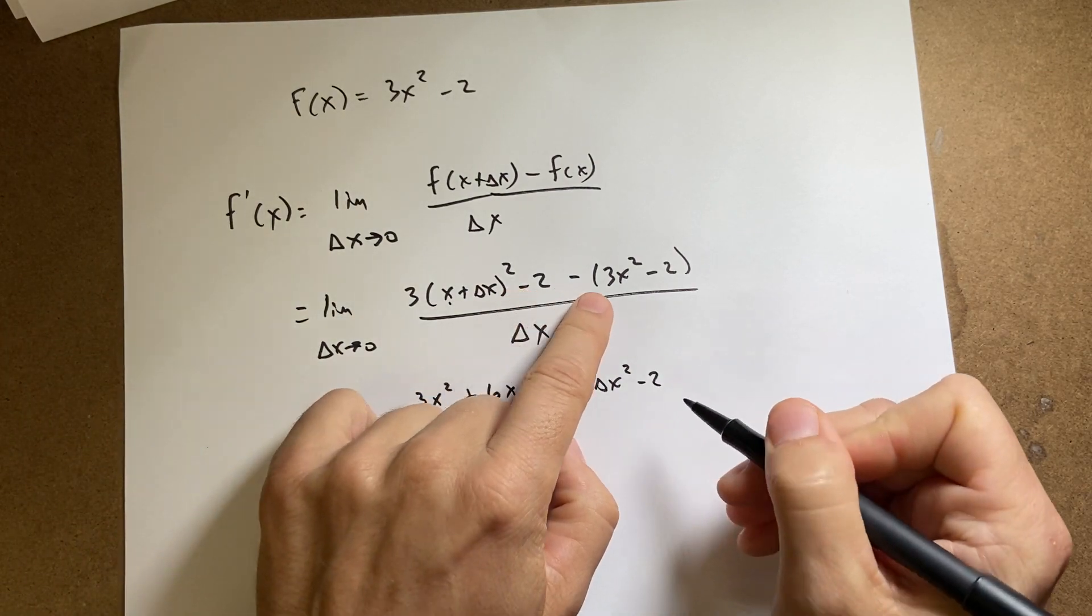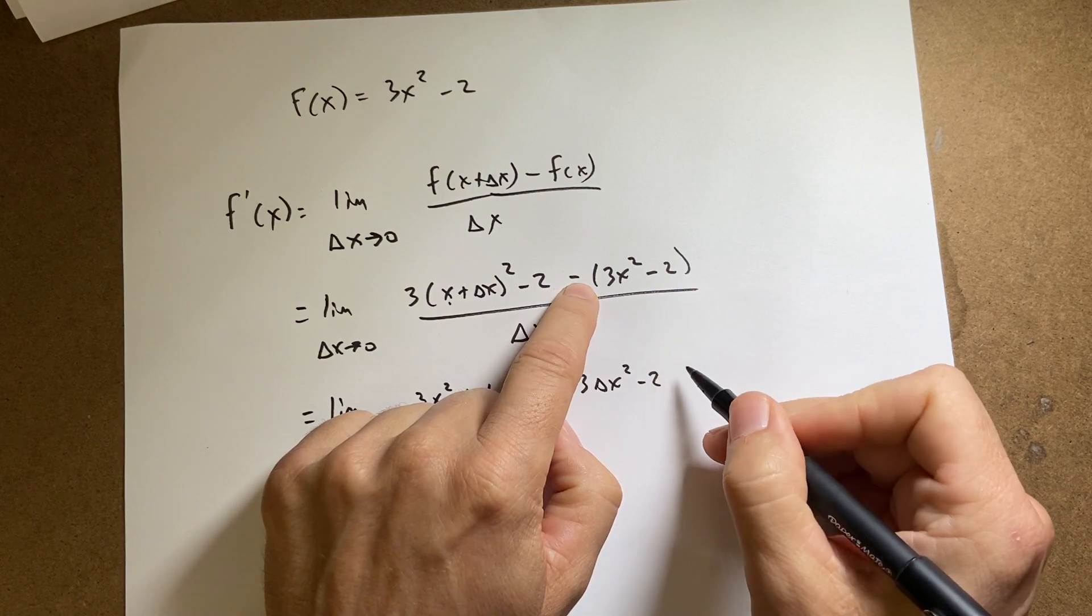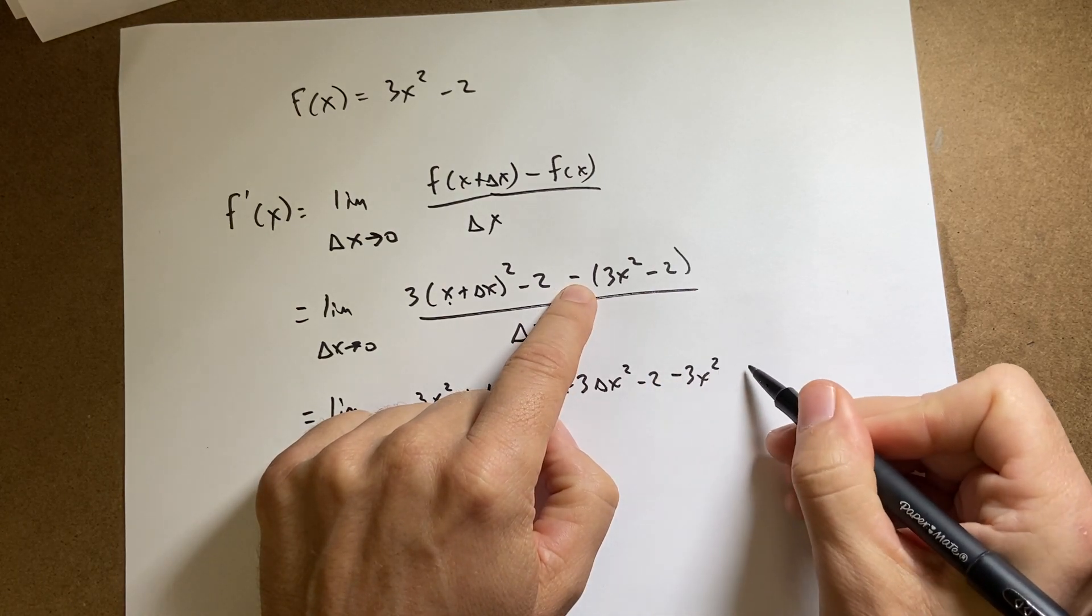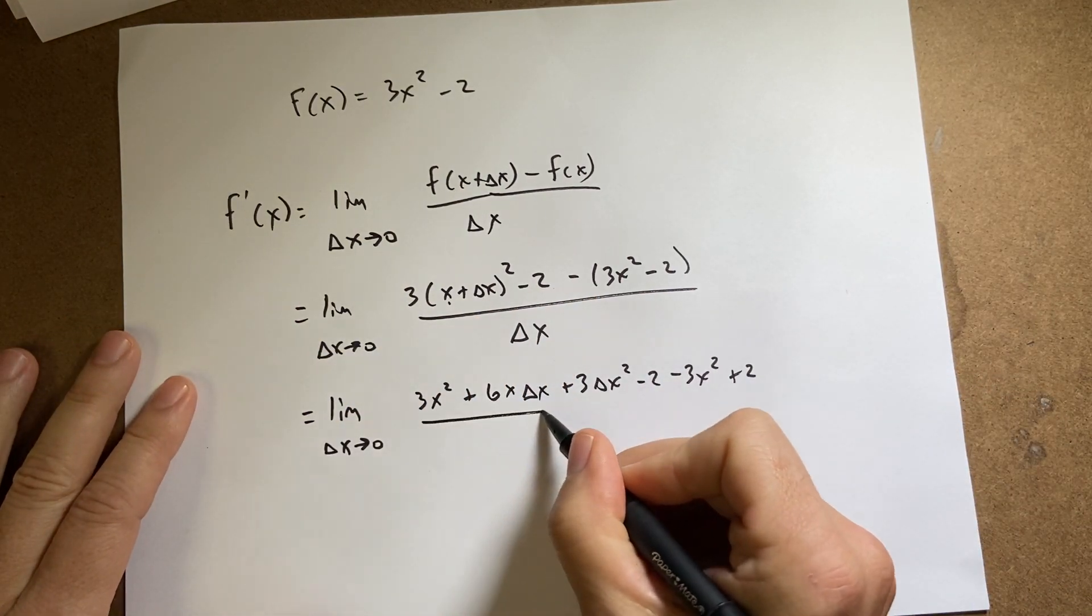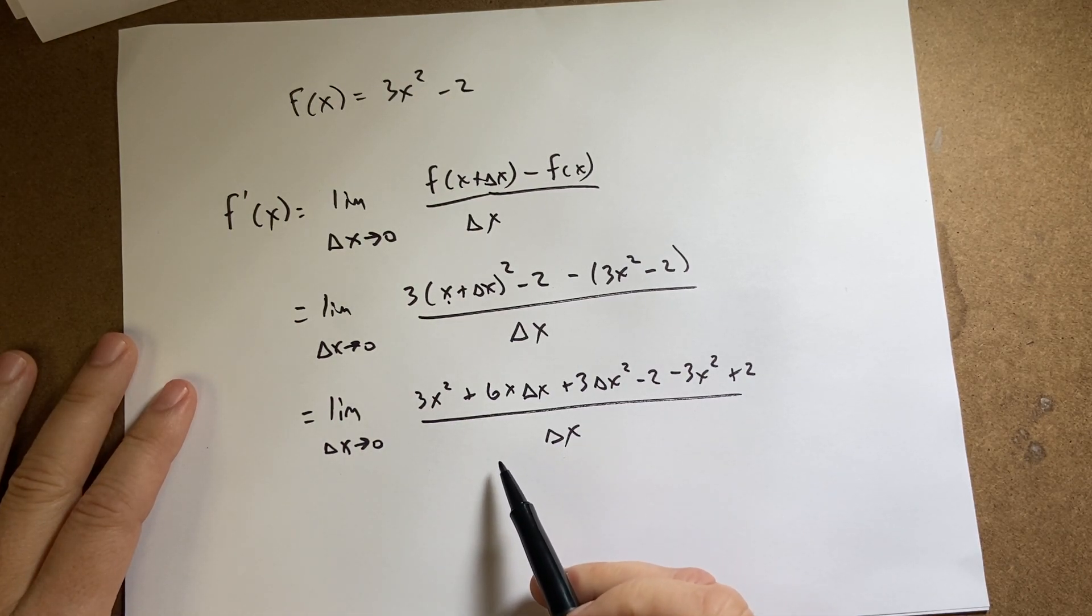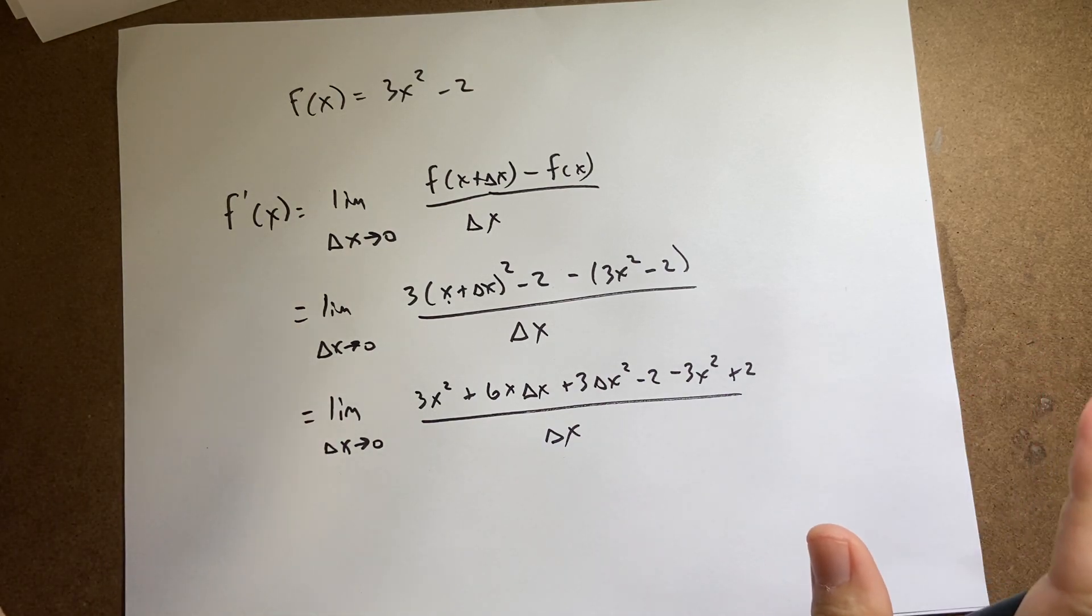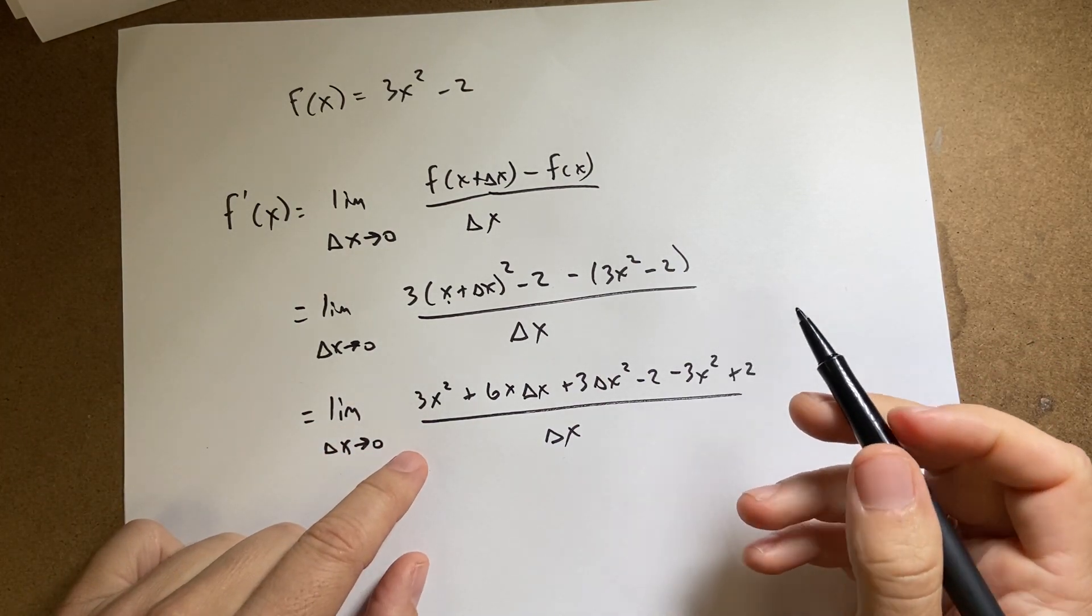And then I have the minus 2. And then I need over here, I can just distribute this in. I don't have to do anything, but I go minus 3x squared plus 2, all of that over delta x. Okay. So, now, I feel like I did something wrong here. Hmm. Okay. Yeah. Okay, I see where my problem is. So, I was getting a little worried there.